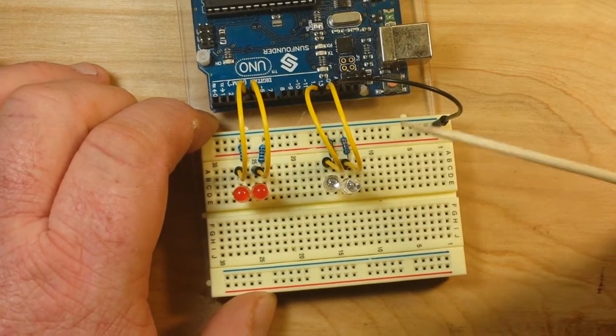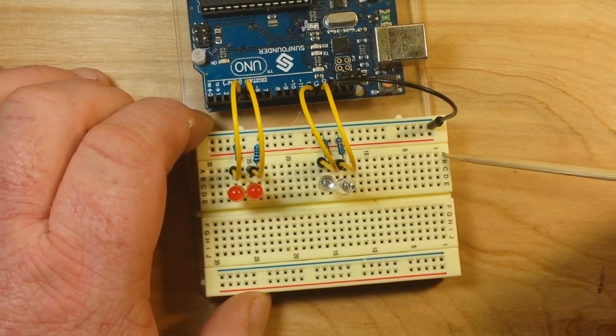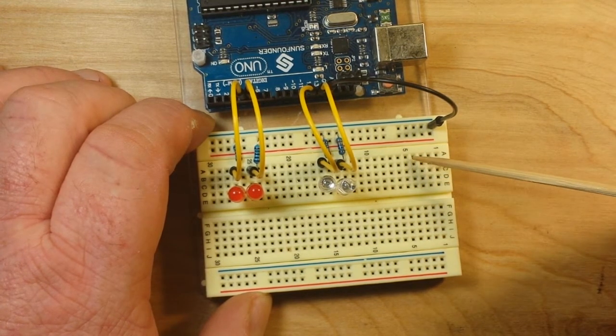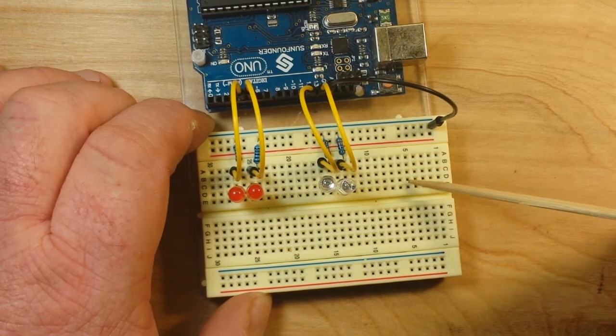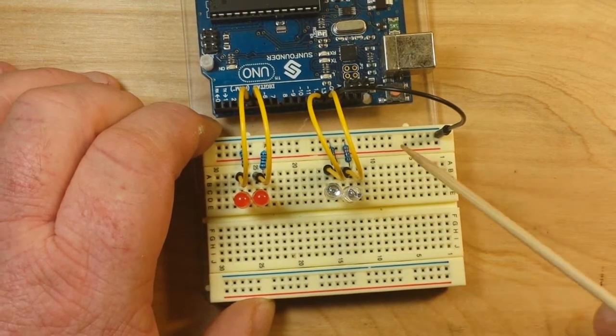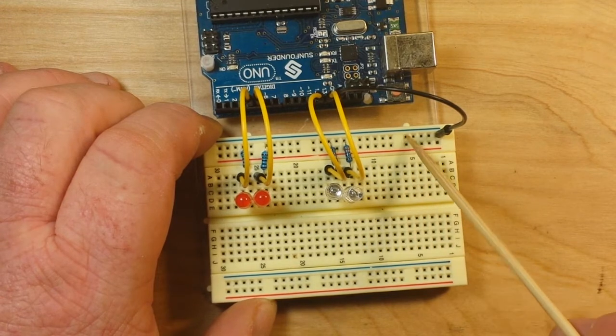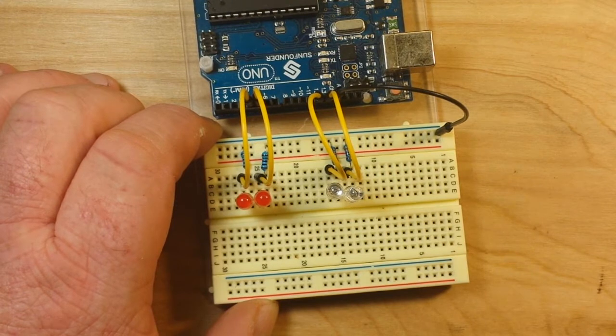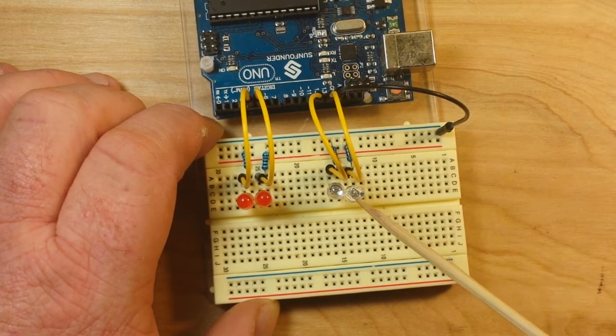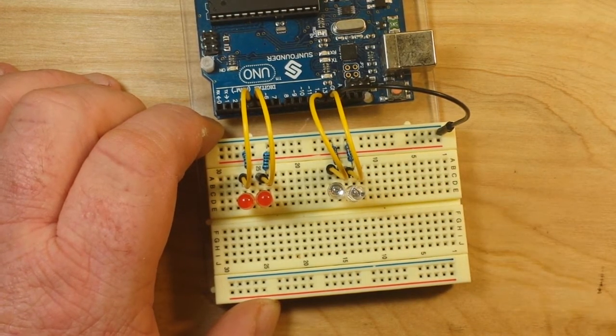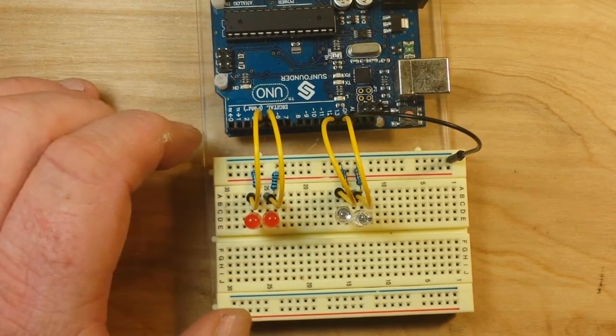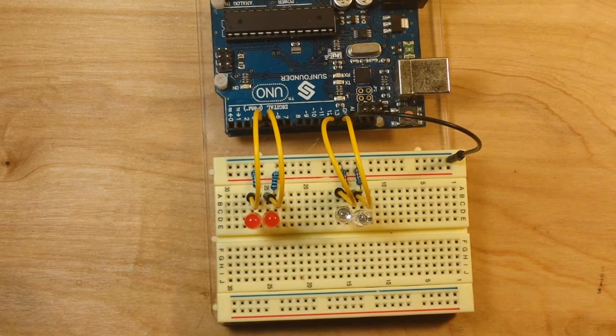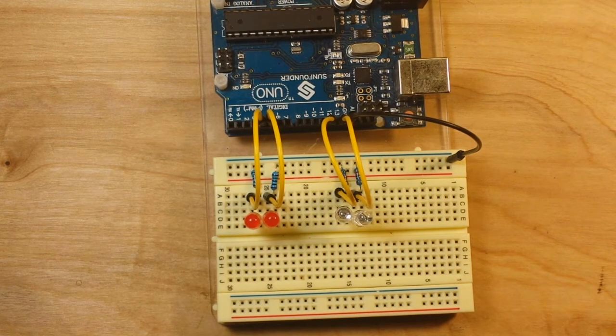Now if you're not used to using the breadboard, all these pins here with ABCDE are connected together vertically like this. All these. So anything you plug in here is also connected to here, here, here, and here, all the way across. So now we have a complete path for our current to flow and all we need to do is write a little bit of code. So let's do that and then we'll come back and we'll see our police flashers in action.